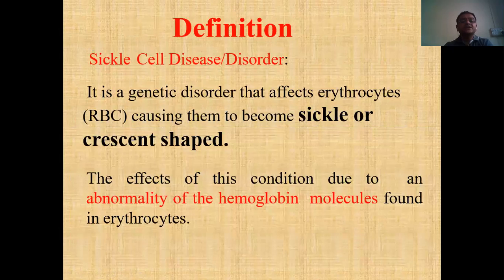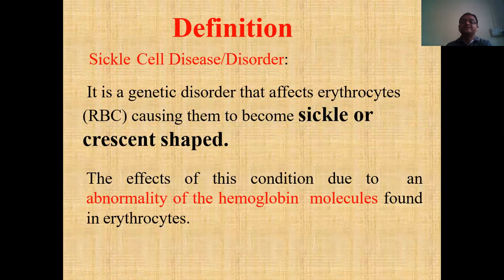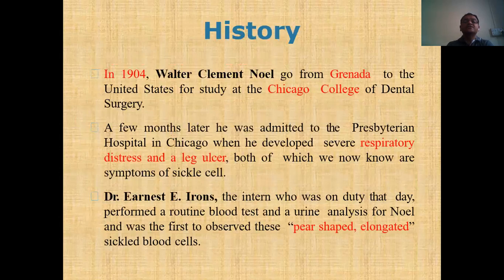By definition, sickle cell is a genetic disorder — not a disease. It is a genetic disorder that affects erythrocytes, causing them to become sickle or crescent shapes. The cause of this condition is due to the abnormality of the hemoglobin molecule found in the erythrocytes.